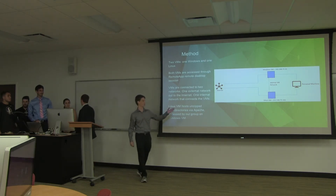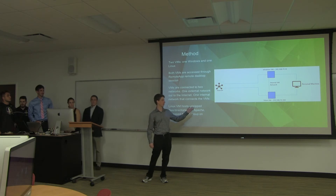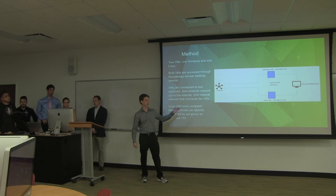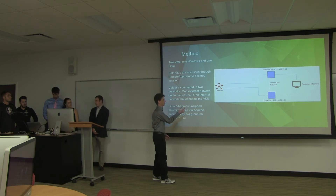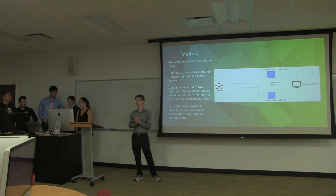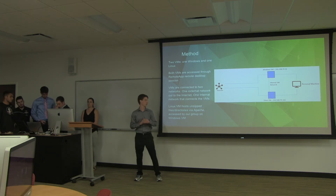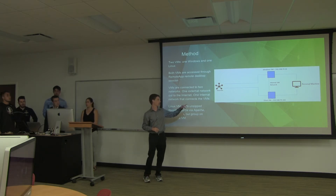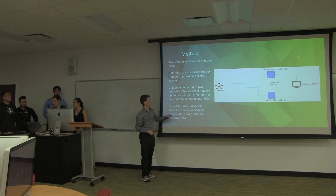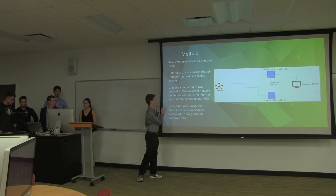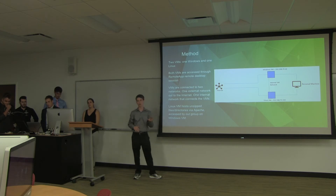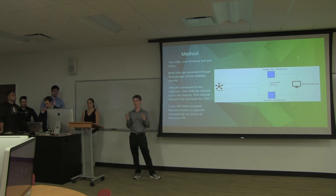I'm Connor Wilson. This is a very basic network diagram for how we went about our methods. We have two VMs — the Windows VM and the Linux machine — both accessible by the remote app at FSU. We can connect on our personal machines. They're connected to two networks: one internal VM network that lets them interconnect, and one that lets them out to the internet. Our Linux machine has no GUI, so we use our Windows machine to access our actual webpages. We'll do a hands-on demonstration here.